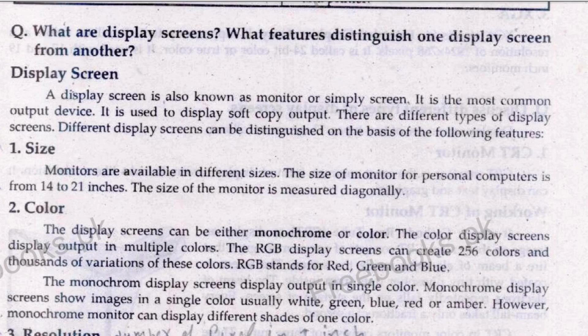Now, how do we say output device? As discussed in the last video, there are two types: soft copy output and hard copy output. Hard copy output is in hard form — we can see and touch it, for example a print. But the display screen gives a soft copy output. The results of your calculations or documents you can see on the monitor. That is why the display screen is also called an output device — it is used to display soft copy output.